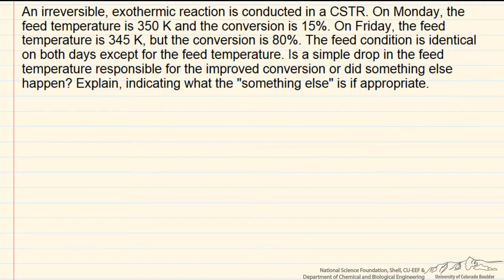Typically what we would expect is that if we feed a CSTR with a lower temperature feed, and it is an irreversible reaction, then the rate of reaction and the conversion will always go down as temperature goes down. So it doesn't make a lot of sense that a simple drop in temperature would lead to a conversion of 80%. What we would expect instead is that maybe if the feed temperature jumped up, it could have ignited the reaction and be operating at an upper steady state.